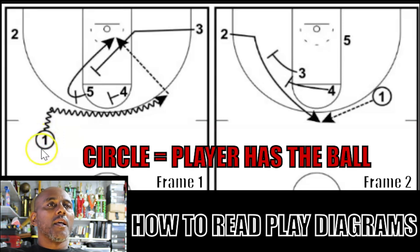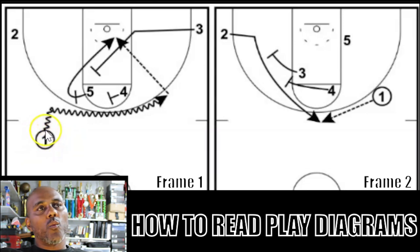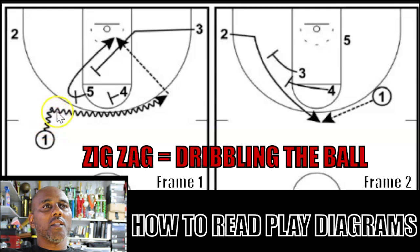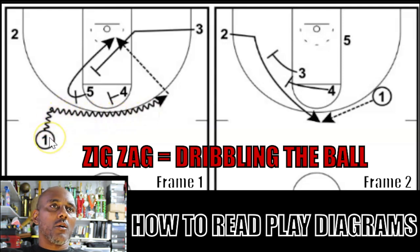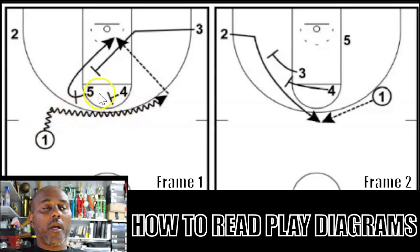First things first, this circle means that he has the ball. So that's the point guard — he starts off with the ball. When you see this kind of zigzag squiggly line, that means he's dribbling the ball. There are different arrows for different things, but that little squiggly line into an arrow means he's dribbling the ball.